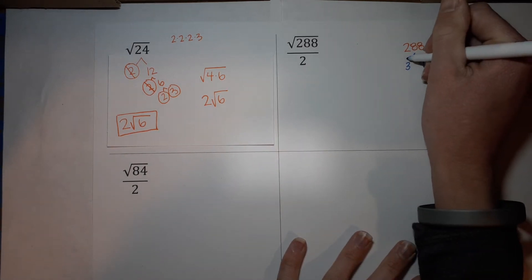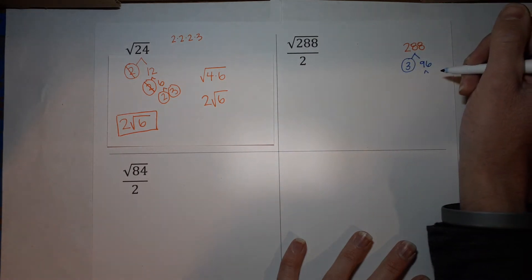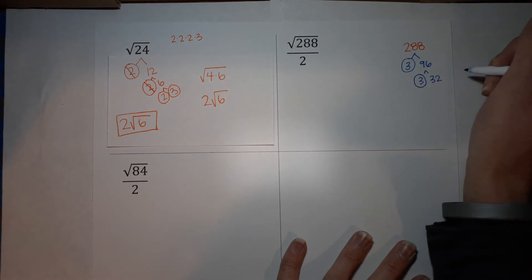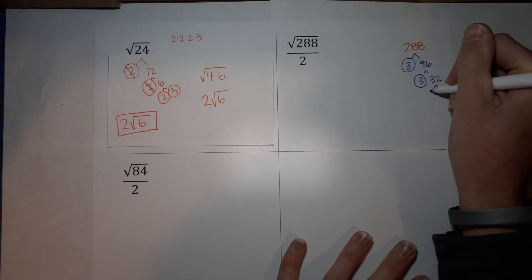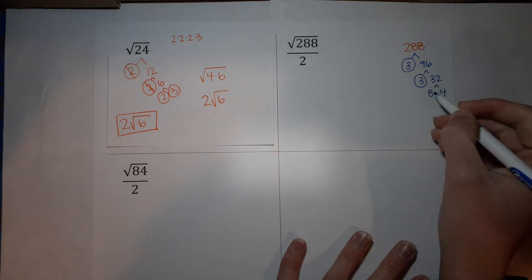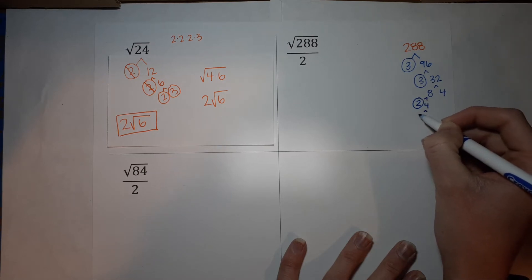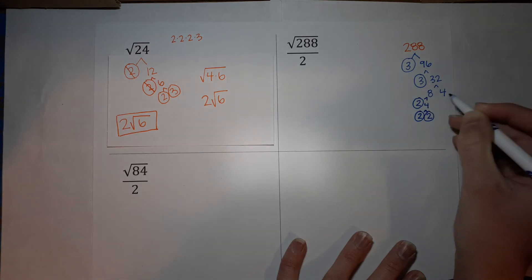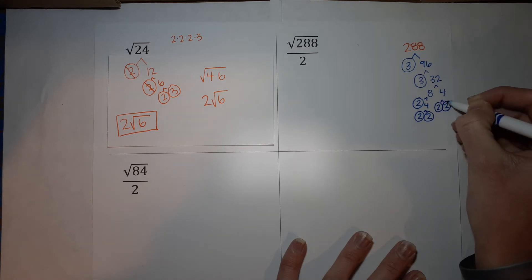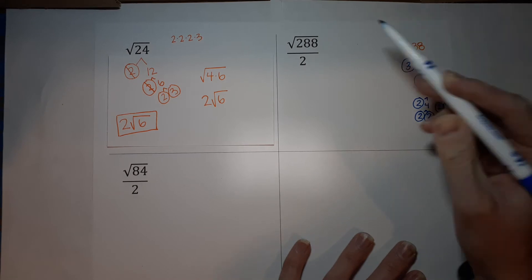3 is prime because only 1 times 3 gives me 3. Now 96 is not prime. 3 times 32 gives me 96. I'm going to circle the 3. 8 times 4 gives me 32. Neither of those are prime, so I'll need to break both of them down. 8 can be 2 times 4, and 4 can be 2 times 2 — both of those are prime. We can't forget about this 4 over here: 4 is 2 times 2. So this means 3 times 3 times 2 times 2 times 2 times 2 times 2 is 288.